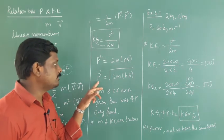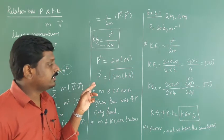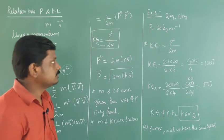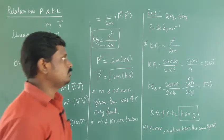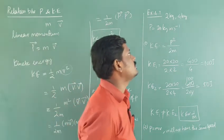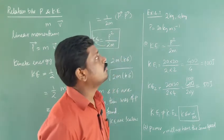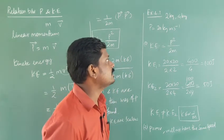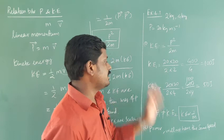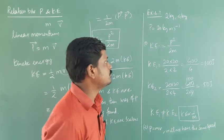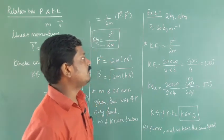Then we will see one problem. Two masses, 2 kg and 4 kg, have the same momentum, 20 kilogram meter per second. Will they have the same kinetic energy? Kinetic energy, we know the formula: P square by 2m.